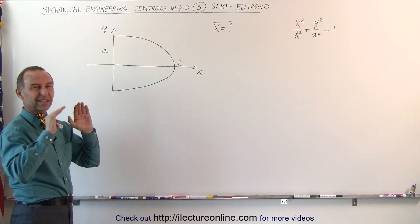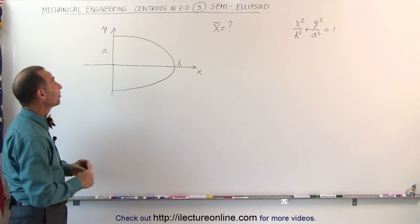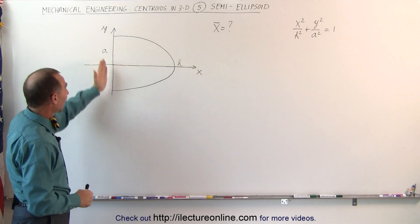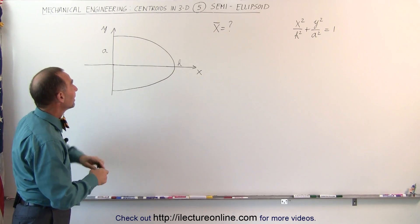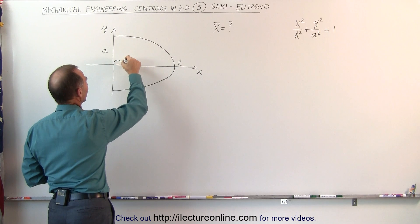So imagine this is an ellipse, like kind of a shape of a football, an American football that is, and we have a half of that, and we're going to find the centroid, the x-coordinate centroid, which would be probably about here, so that's the distance we're looking for.